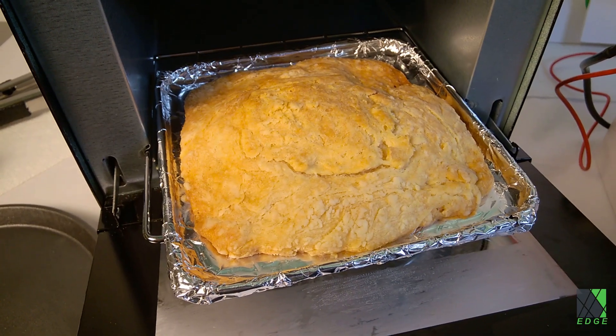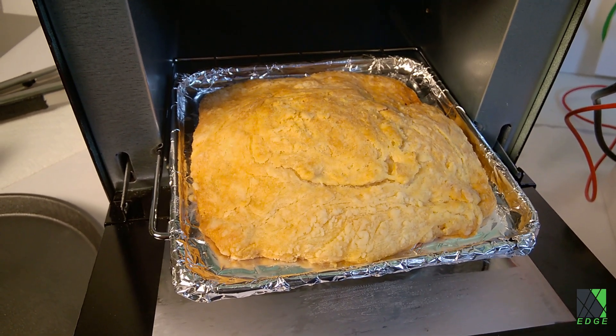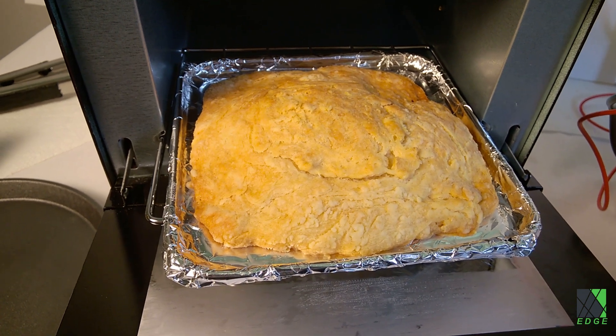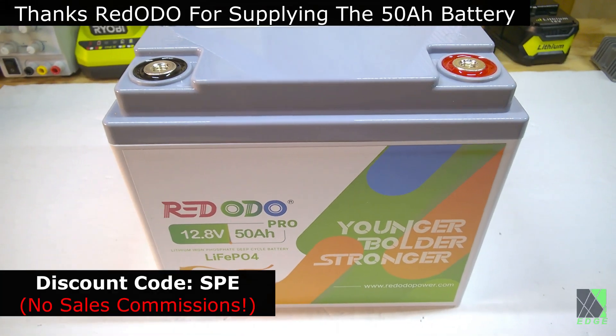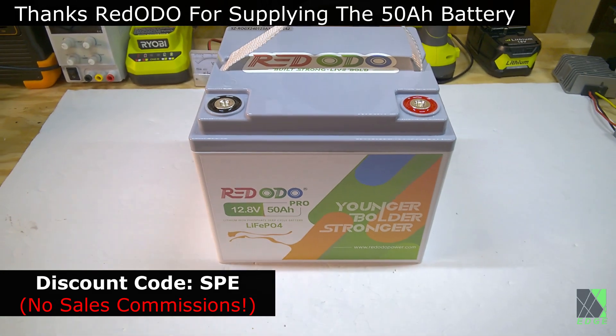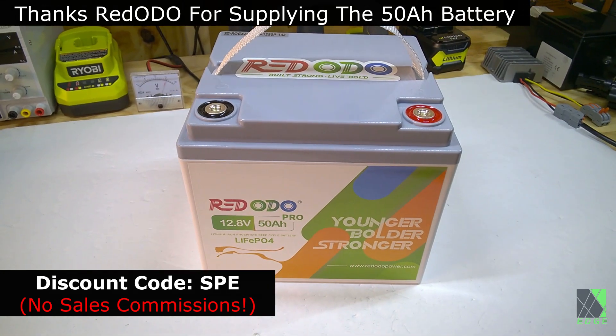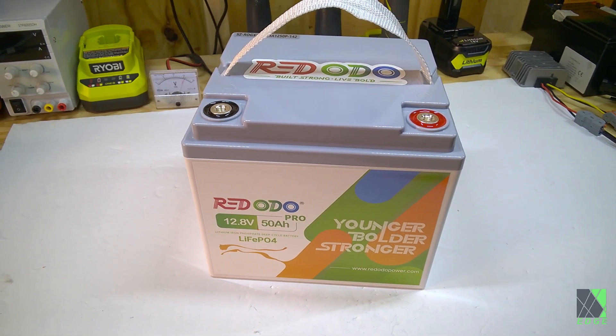I believe that small 12 volt cooking appliances should be an integral part of any preparedness and survival plan. There is a discount code in the description if you would like to buy a red ODO battery. Note, I don't accept commissions for sales. Thanks for watching and hope to see you next time.